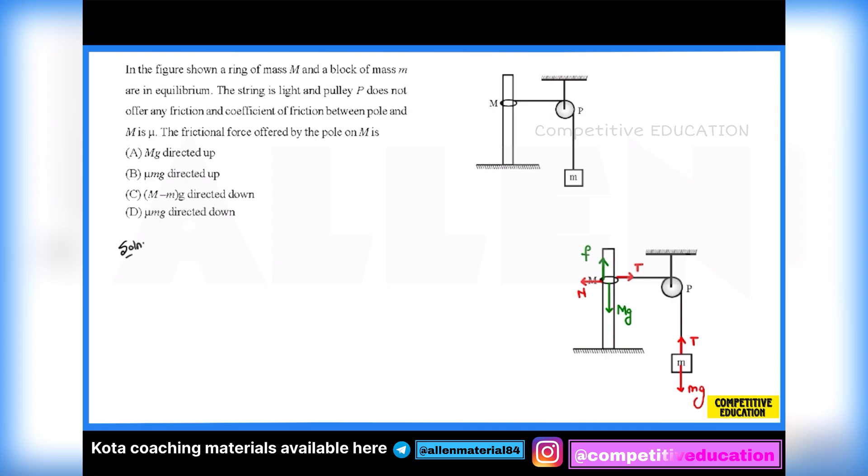I have made this figure in which I have showed you the forces. There will be tension acting upward and the weight of this block downwards, mg. Now this pulley is frictionless and massless, so the tension remains the same. This wall offers a normal to this ring like this. The wall offers friction in the upward direction, and the weight of this ring is in the downward direction, that is capital MG.